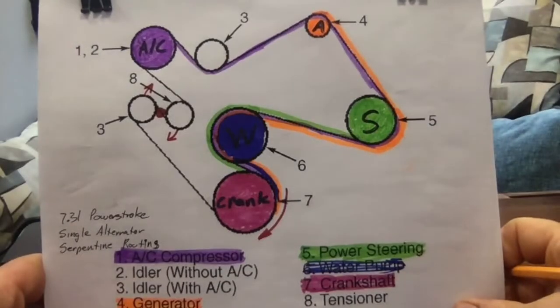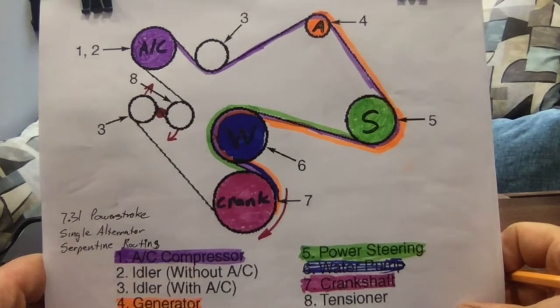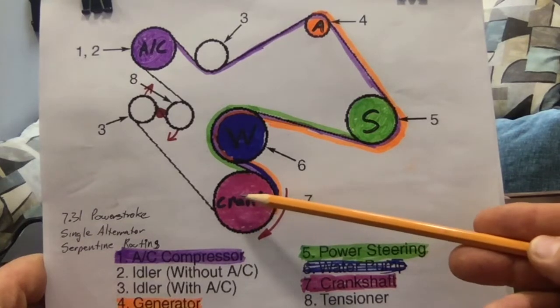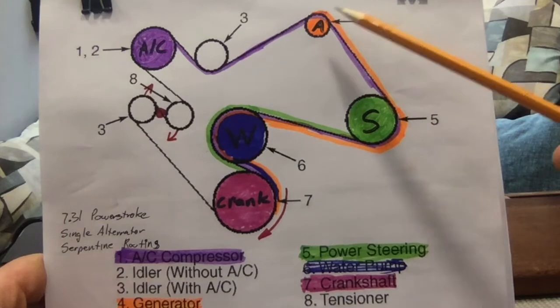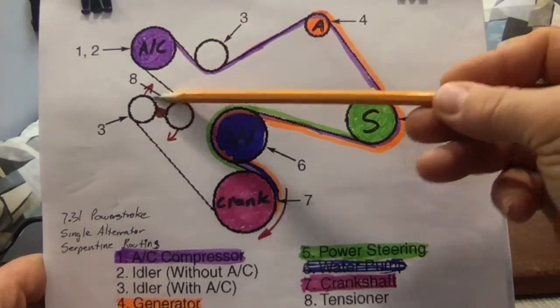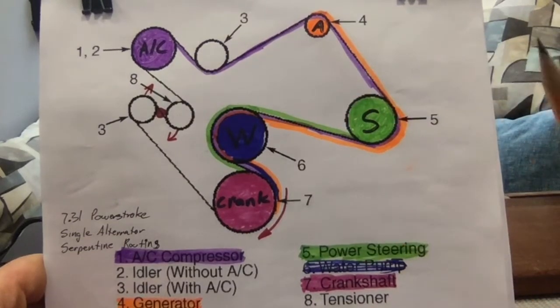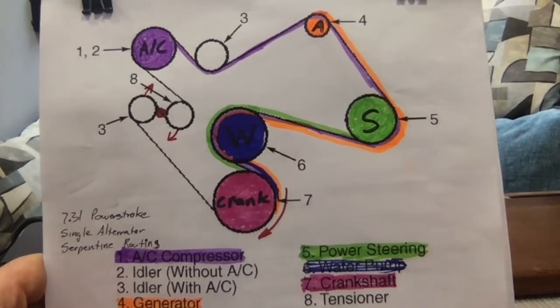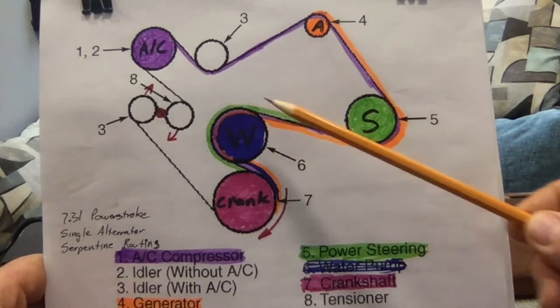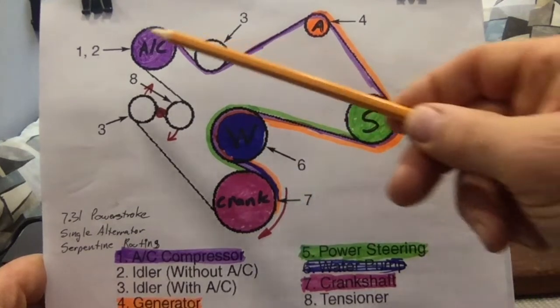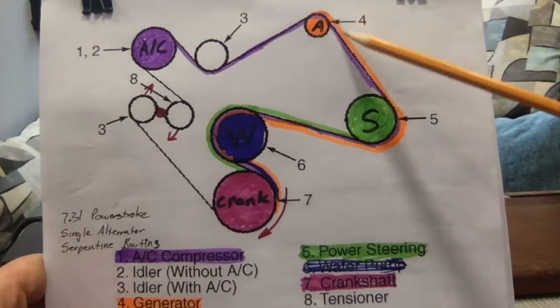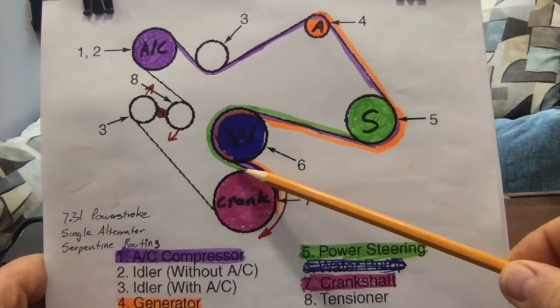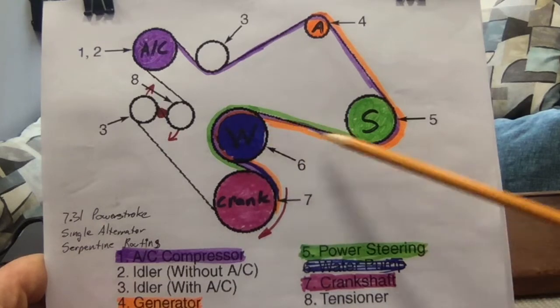This is a belt routing diagram of the 7.3 liter engine with the basic configuration. You can see the crankshaft here, which produces the power that drives all the accessory drives: the water pump, the power steering pump, the primary alternator, the air conditioning compressor, and the belt tensioner here. Just reviewing at some length exactly how an accessory drive should work as the crankshaft rotates in a clockwise direction, creating tension on the belt. As you can see with my multi-colors here, you can see that each of these devices requires belt tension to be produced by the crank in order to drive them.